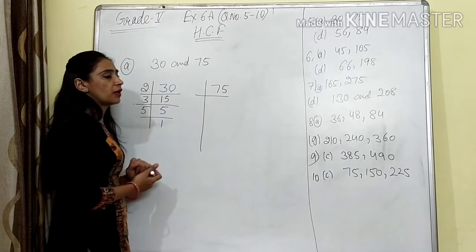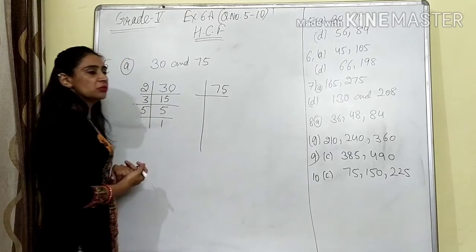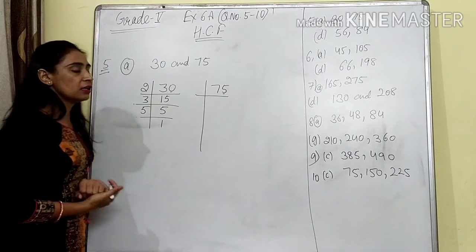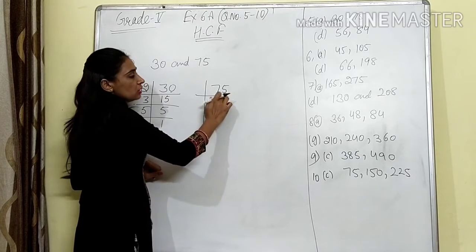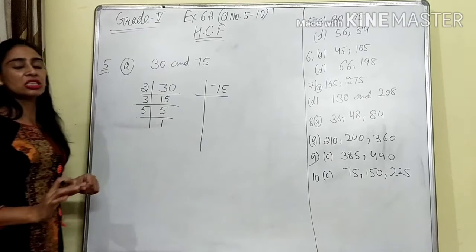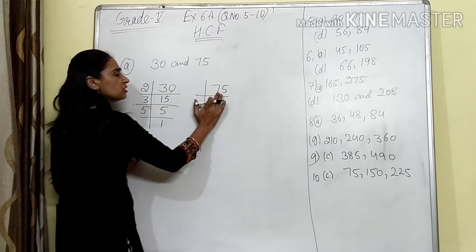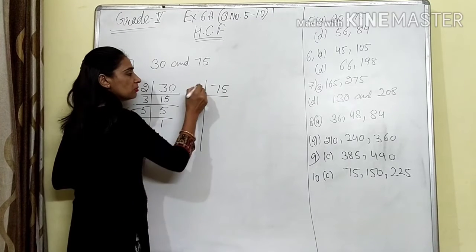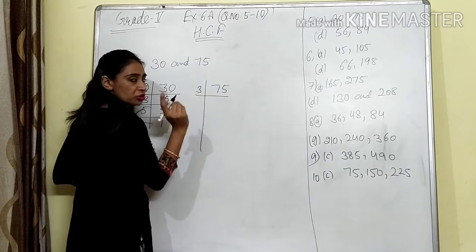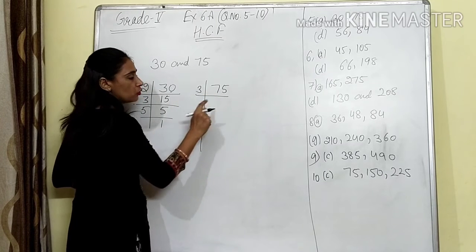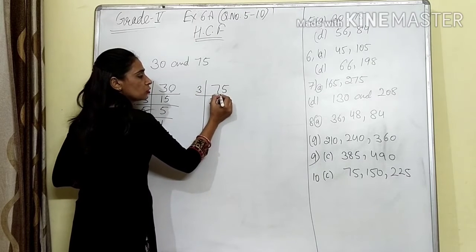Now look at 75. We know that the last digit is 5, so it will be divisible by 5. Also, it is not divisible by 2 because this is an odd digit. To check divisibility by 3, we check the sum of digits, which is 12. So it will be divided by 3. We will divide 75 by 3, and write the quotient here.